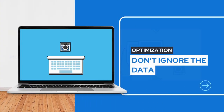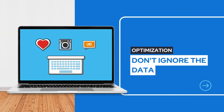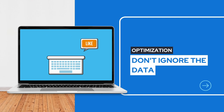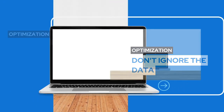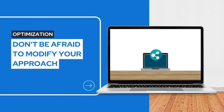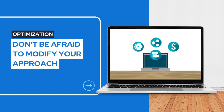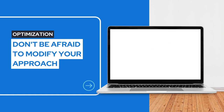Most social media platforms come with built-in analytics tools that can give you these insights, but don't just set it and forget it. Optimization is all about making tweaks and improvements over time. If an ad isn't performing as expected, don't be afraid to adjust your approach — maybe you need to rework your message, switch up your visuals, or reconsider your target audience.